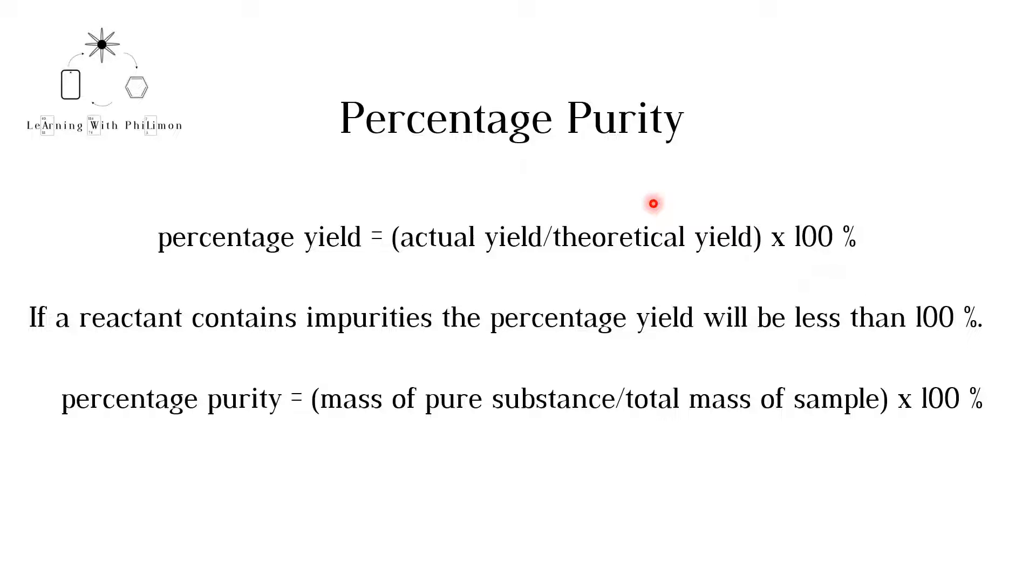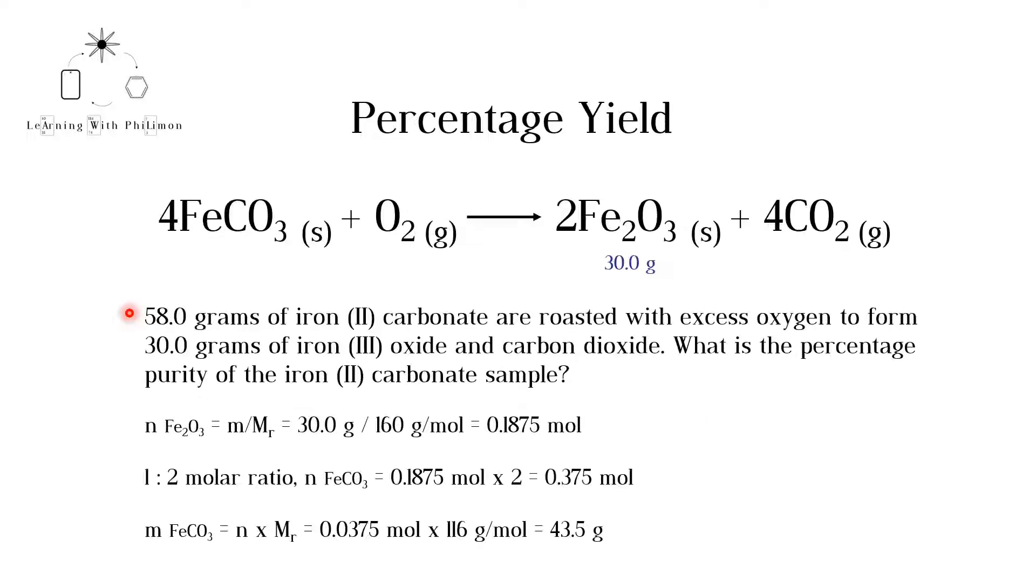To calculate the percentage purity of a sample, we can use the following equation. Percentage purity equals the mass of the pure substance divided by the total mass of the sample, multiplied by 100%.